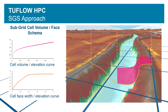With the subgrid sampling approach we sample the underlying topography available within the DTM or TIN, and from this we develop non-linear cell volume versus elevation curves and also cell face width versus elevation curves. This means that the bottom of the cell is no longer flat. We're representing the full channel bathymetry and our cell faces are more akin to regular cross sections rather than the rectangular cross sections of the traditional approach.